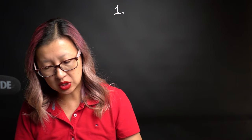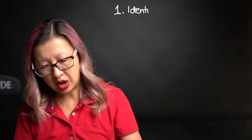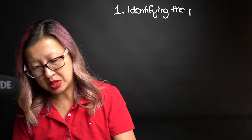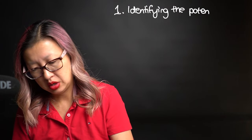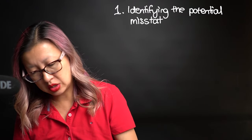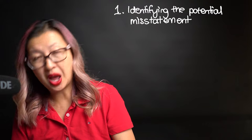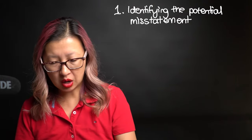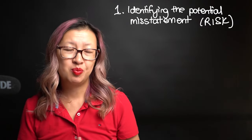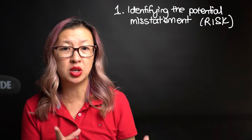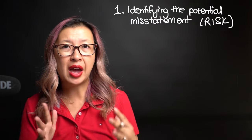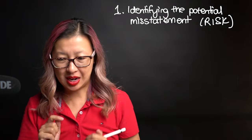Step number one is going to be about identifying the potential misstatement. The reason we need to do this is that a control is a response to a risk. So essentially, we have to identify the risk — what is the potential misstatement, the potential error that could occur? That's step number one.